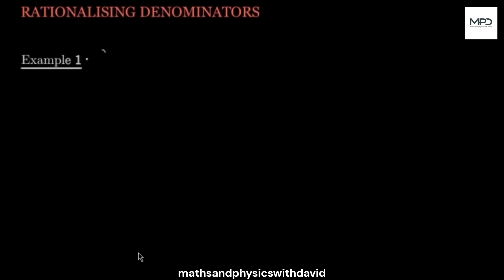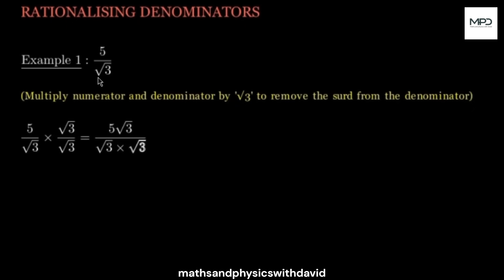Now we're going to talk about rationalizing denominators — this is where students find it most difficult. When you have a question like this, we don't like to have the denominator in surd form, so we prefer to have it in a non-surd form. You multiply the entire question by the denominator over itself: 5 over root 3 times root 3 over root 3. Root 3 over root 3 equals 1, so it doesn't change the value. 5 times root 3 gives 5 root 3, and square root of 3 times square root of 3 gives root 9, which is 3.